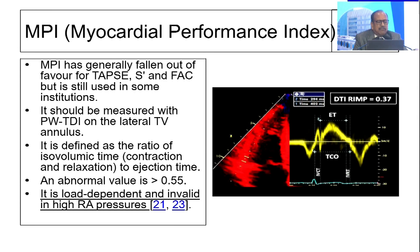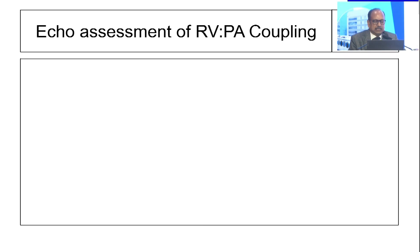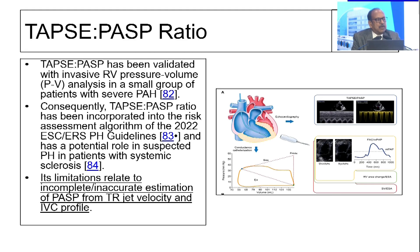The next important factor is myocardial performance index — really a good measurement. Just do RV free wall TDI; it gives you tricuspid valve closing and opening time and RV ejection time, and based on that you calculate right-sided myocardial performance. Any value more than 0.55 is considered normal. I'm not using flow pattern — I'm using myocardial contraction velocities. One more important measure is the TAPSE-to-pulmonary artery systolic pressure ratio — a very good measure for evaluating pulmonary artery hypertension.